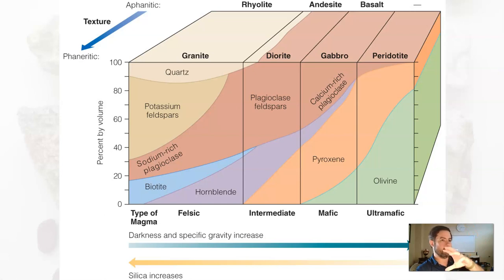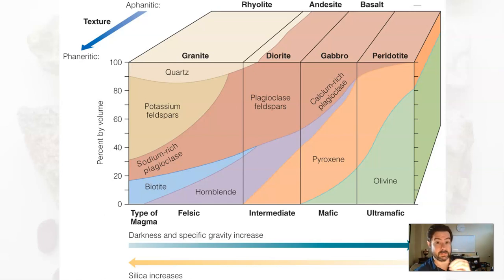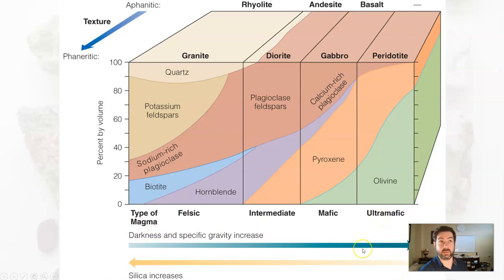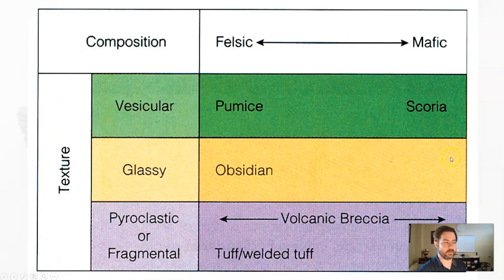It's mantle material — not magma and lava, which is melted crust material. So peridotite is ultramafic, very dark, or even sometimes into green. Very low on the silica content. That's how you look at this three-dimensional chart.